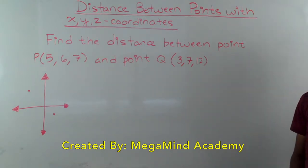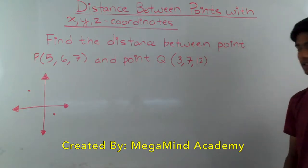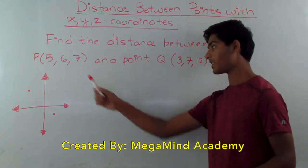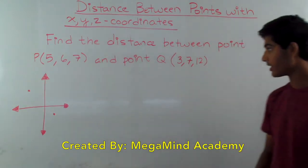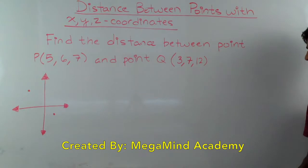Let's say we have a problem like this: find the distance between the points P, which is (5, 6, 7), and the point Q, which is (3, 7, 12).